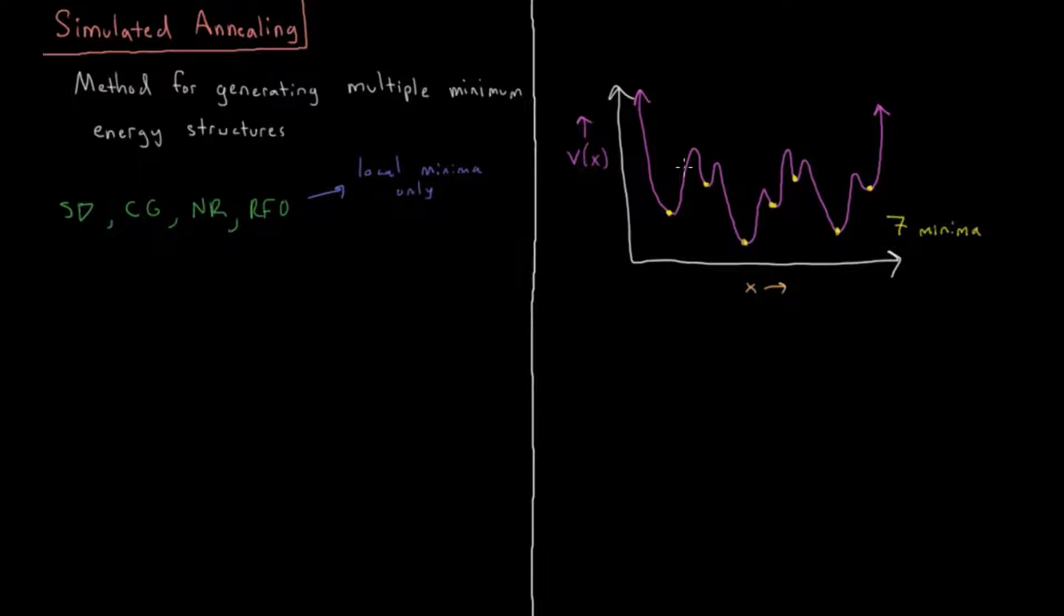So in a specific region they will only find the minimum which rolls downhill closest to them. If you started here, you have a zero percent chance of getting any of these other minima if you're doing steepest descent, conjugate gradient, etc.